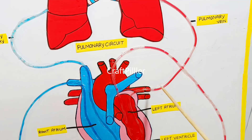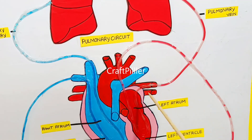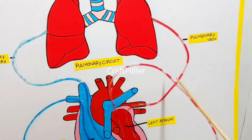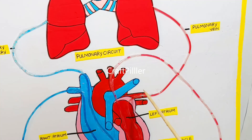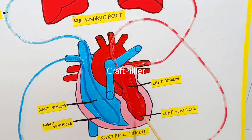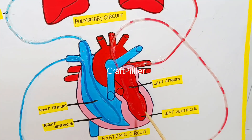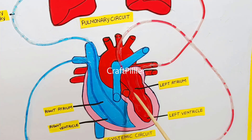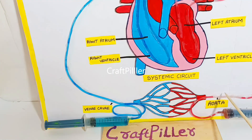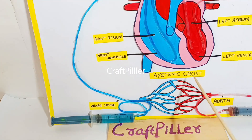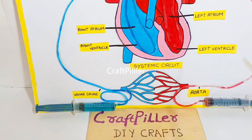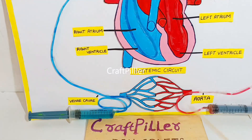That oxygenated blood is then sent via the pulmonary veins to the heart through the left atrium. As you can see, the blood coming from the lungs — which is oxygenated — enters via the left atrium, then goes to the left ventricle. From the left ventricle, it is sent through the aorta to the various parts of the body.